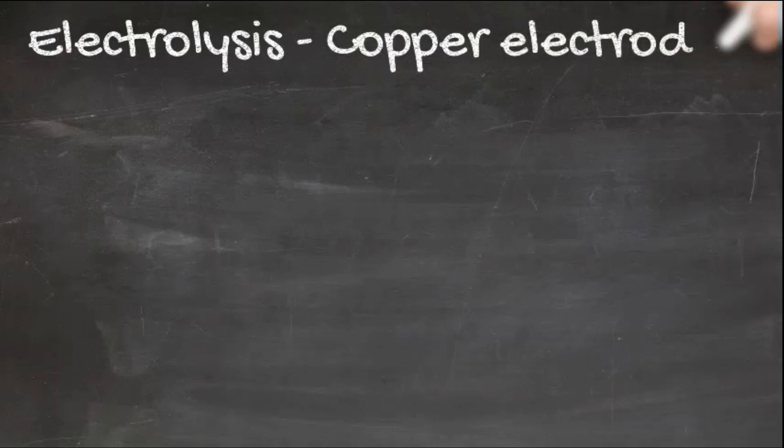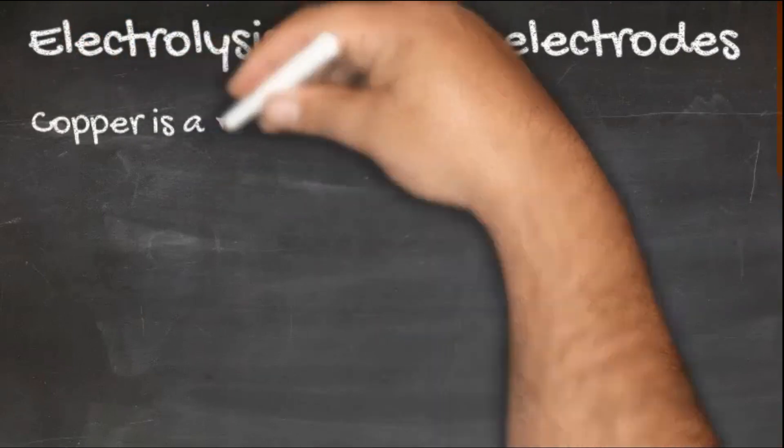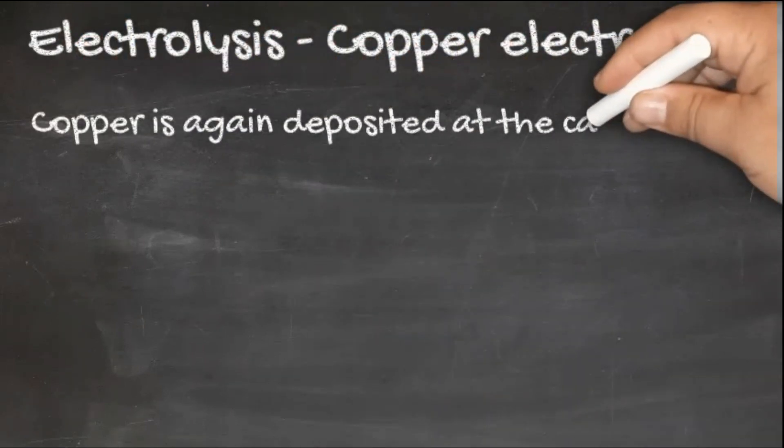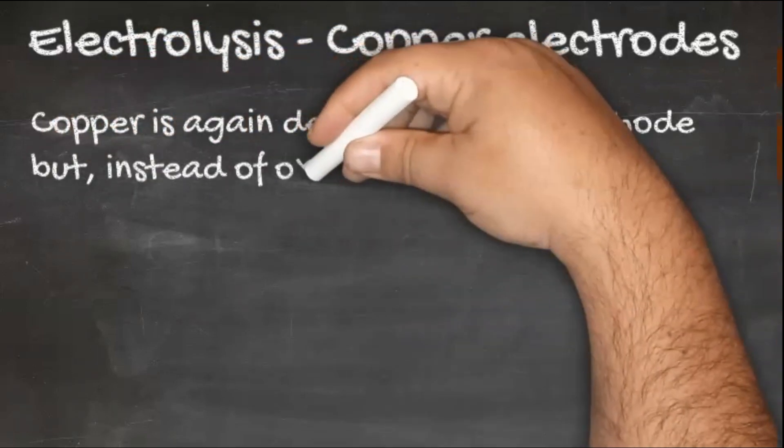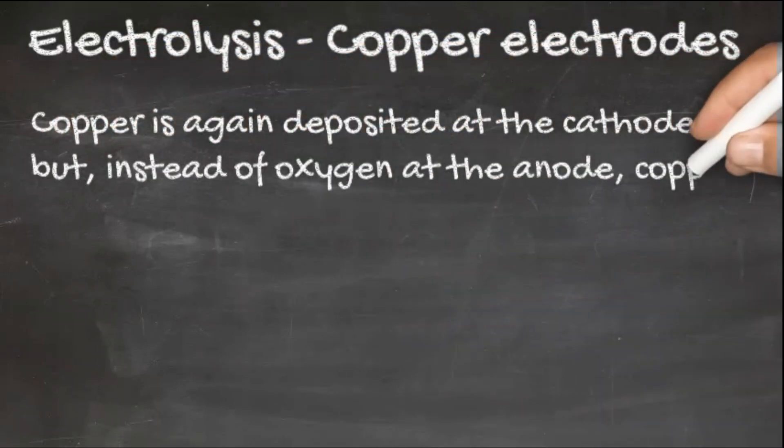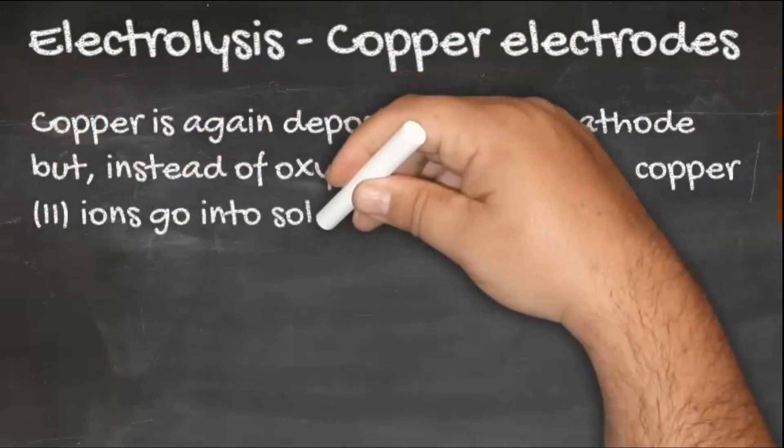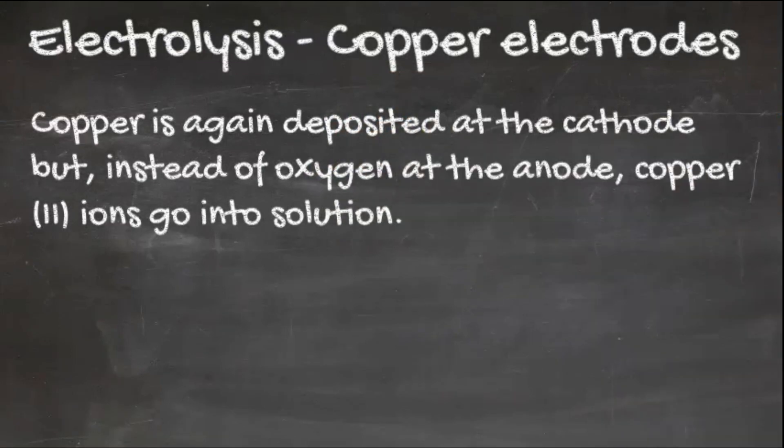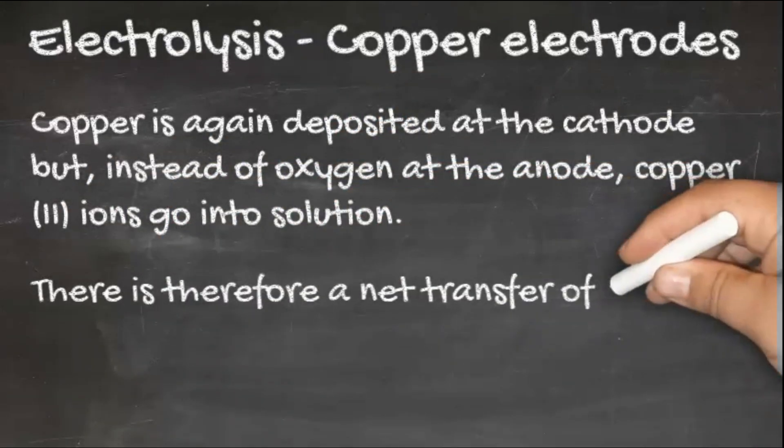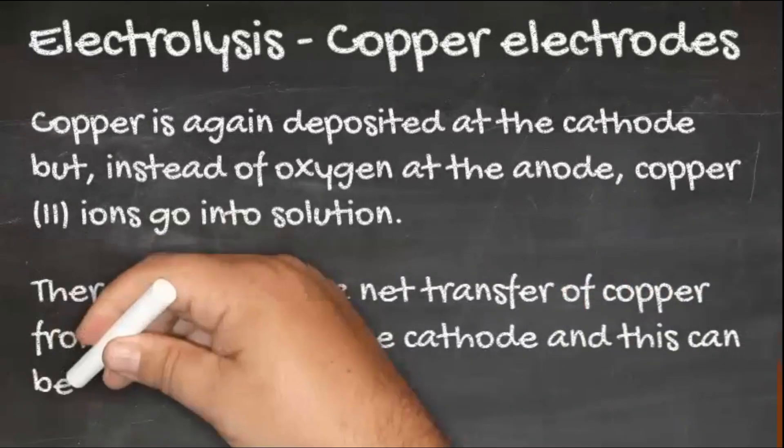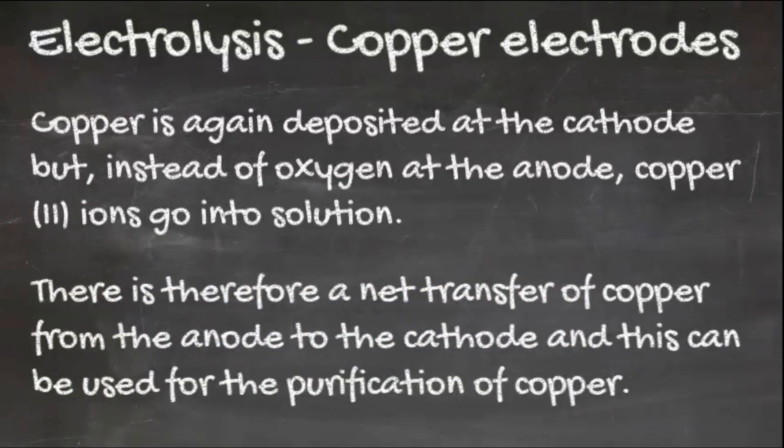This experiment can be repeated using just copper electrodes. Copper again is deposited at the cathode, but instead of oxygen at the anode, copper (II) ions go into solution. As a result, there is a net transfer of copper metal from the anode to the cathode, and this can be used for the purification of copper.